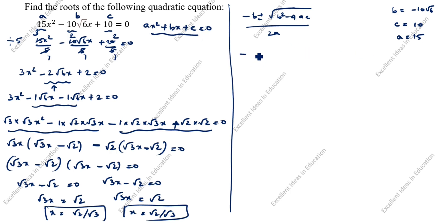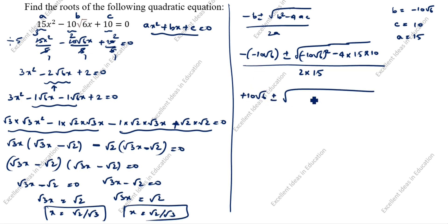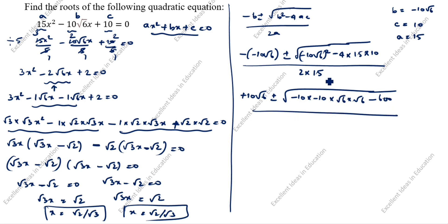Substituting: minus b is minus(−10√6) which becomes plus 10√6, plus or minus √[(−10√6)² minus 4×15×10], all divided by 2×15. Expanding: (−10√6)² equals 100×6 equals 600, and 4×15×10 equals 600.